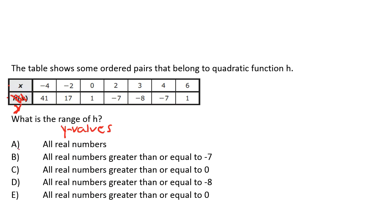Let's look at the answer choices. A: all real numbers — that's kind of hard to tell because it doesn't really look like it includes all real numbers. B: all real numbers greater than or equal to negative 7. Well, if we look at the table, the y-values go down below negative 7 — all the way down to negative 8. So it can't be B because B only includes values greater than or equal to negative 7.